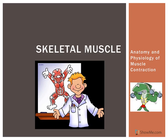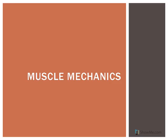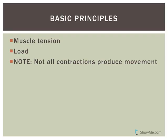This recording is going to address some principles of muscle mechanics. A couple of terms to be aware of before we talk about muscle mechanics are two basic principles. The term tension — muscle tension — is a force developed when a contracting muscle acts on an object. When the actin and myosin are interacting with each other, that actually produces muscle tension.